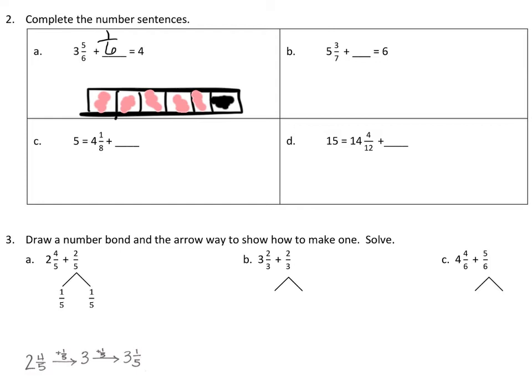And, likewise, on B, you're missing four sevenths more. Notice that the three sevenths and the four sevenths would make seven sevenths, which is one, plus five is six. Let's try it again on C. Five is the same as four and one eighth, plus how many more eighths? How many more eighths would give us that extra whole? Well, seven eighths. Plus the one eighth would be eight eighths, which is one, and then the extra four would be added to it to make five.